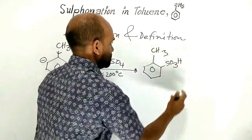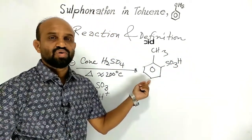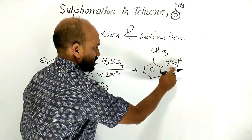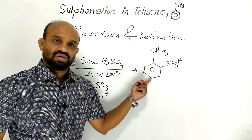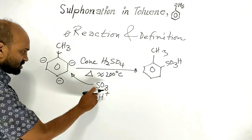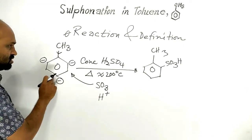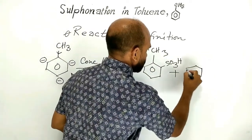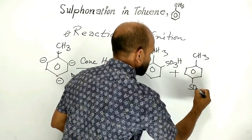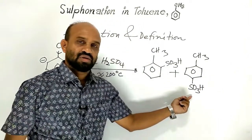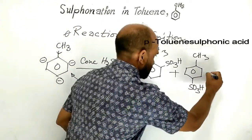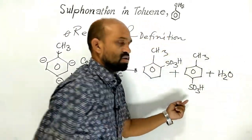The products are orthotoluene sulfonic acid (SO₃H group at the ortho position) and paratoluene sulfonic acid (SO₃H group at the para position). Water is formed as a by-product in this reaction.